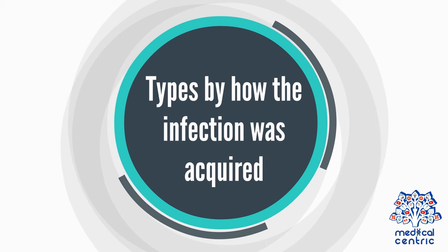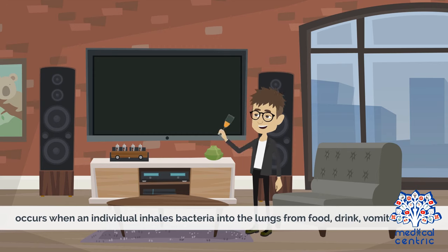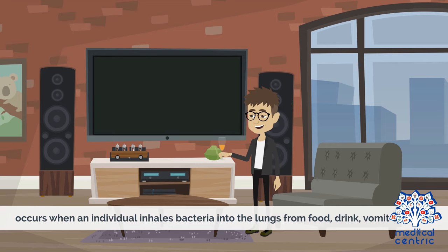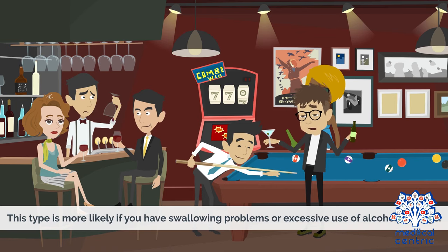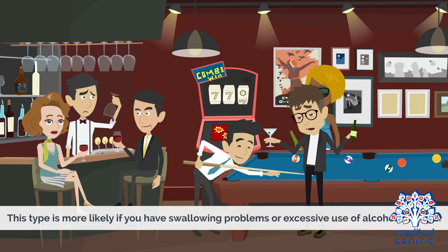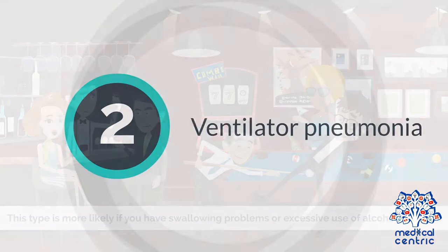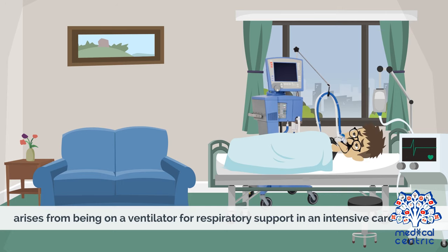Types by How the Infection Was Acquired. Aspiration Pneumonia occurs when an individual inhales bacteria into the lungs from food, drink, vomit, or saliva. This type is more likely if you have swallowing problems or excessive use of alcohol or drugs. Ventilator Pneumonia arises from being on a ventilator for respiratory support in an intensive care setting.